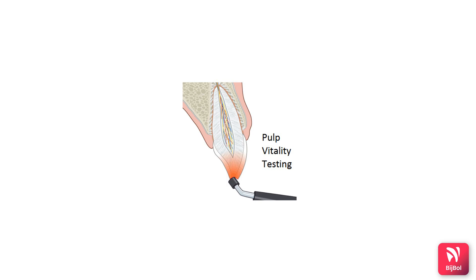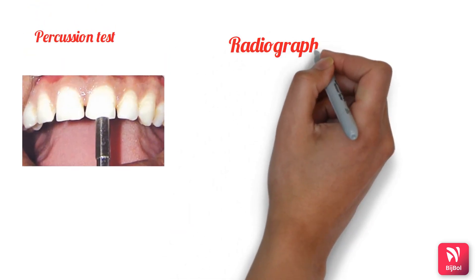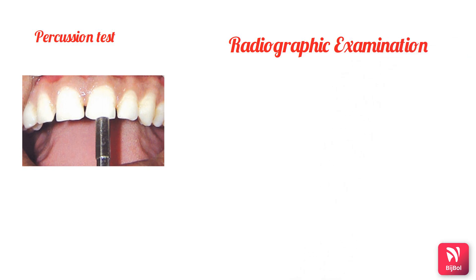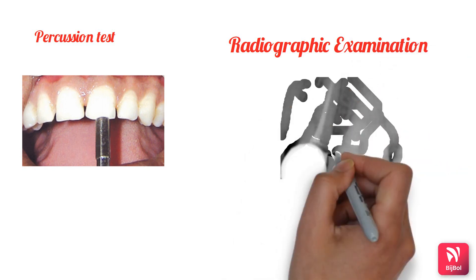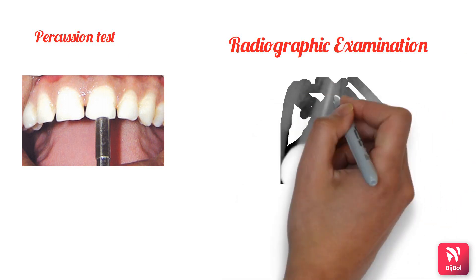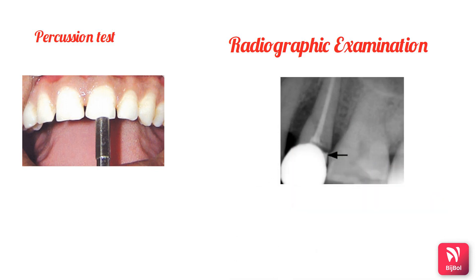Radiographic examination of the area of suspected injury should follow. Occlusal exposure of the anterior region may reveal lateral luxation and root fracture, while periapical radiographs can assess crown as well as cervical root fractures. That is how examination of traumatic injuries is done.